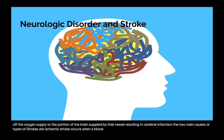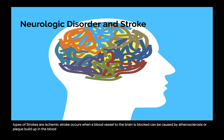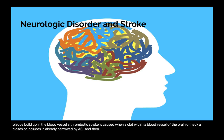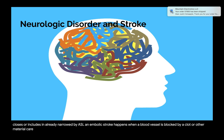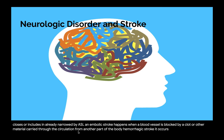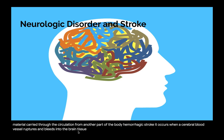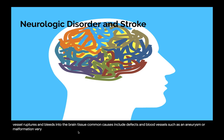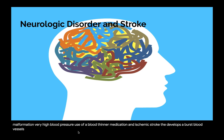The two main types of stroke are ischemic and hemorrhagic. An ischemic stroke occurs when a blood vessel to the brain is blocked, and can be caused by atherosclerotic plaque buildup. A thrombotic stroke is caused when a clot within a blood vessel of the brain or neck closes or occludes an already narrowed vessel. An embolic stroke happens when a blood vessel is blocked by a clot or other material carried through the circulation from another part of the body. A hemorrhagic stroke occurs when a cerebral blood vessel ruptures and bleeds into the brain tissue, with common causes including aneurysm, very high blood pressure, use of blood thinners, or an ischemic stroke that develops a burst blood vessel.